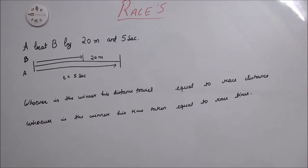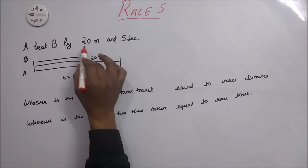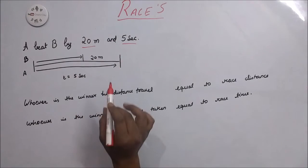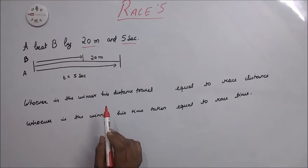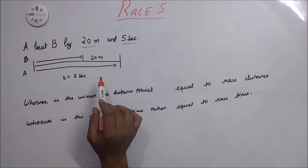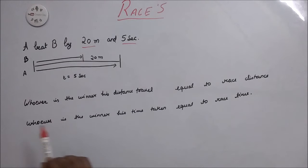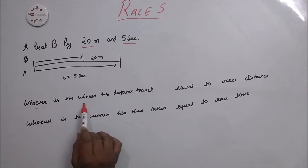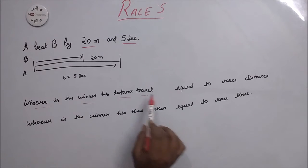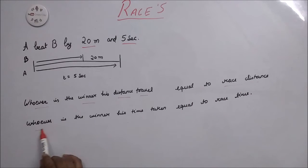Now here is the third concept. A beat B by 20m and 5 seconds. That means A travels 20m more than B. B travels 20m less than A. A takes 5 seconds less than B. B takes 5 seconds more than A. Whoever is the winner, his distance traveled equals the race distance. And whoever is the winner, his time equals race time.